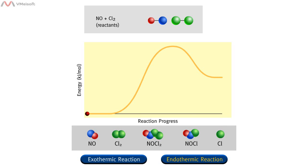This is an energy profile for nitrogen monoxide, NO, reacting with chlorine molecules, Cl2, to produce nitrosyl chloride, NOCl, and chlorine atoms. Click on each of the regions — A, B, C, or D — as they appear, to view the molecular changes that occur during each stage of this reaction.